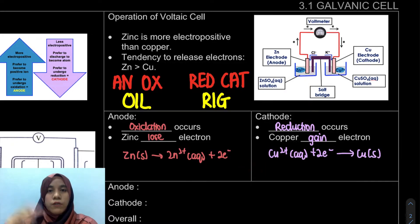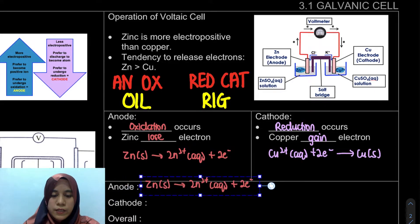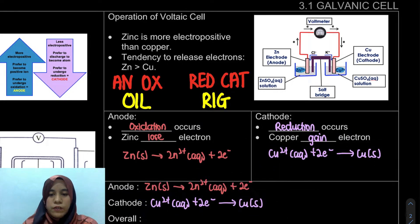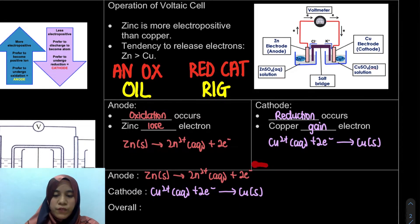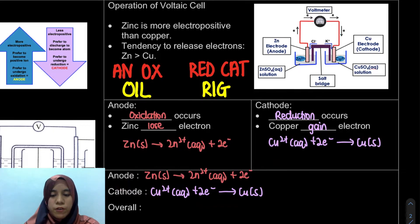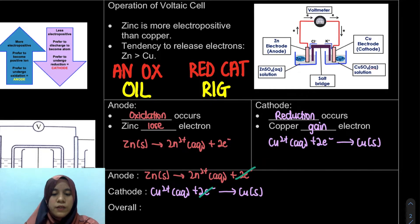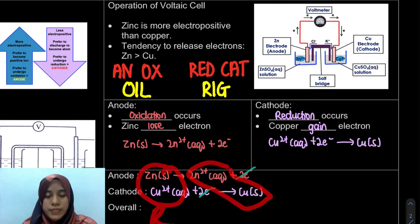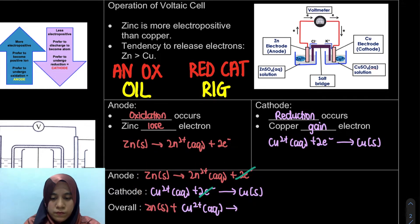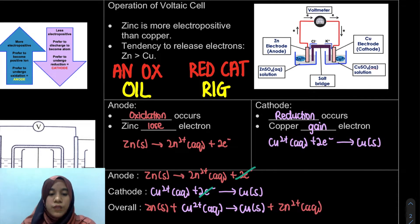Next, we write the overall cell equation by combining the anode and cathode equations. To simplify, cancel out species that appear on opposite sides — in this case, the electrons appear on the product side of the anode equation and the reactant side of the cathode equation, so they cancel. Ensure reactants are on the reactant side and products on the product side to get the final overall cell equation.